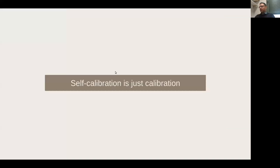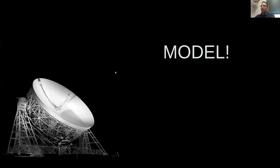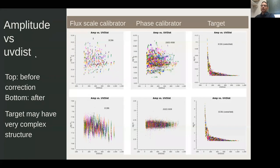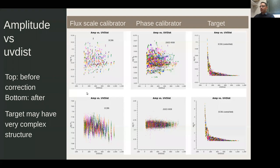Self-calibration is just calibration — there is no actual difference. You apply gaincal and applycal to solve for the residual gains affecting the data. The main difference is that you need a model — and a good model. This is an example in visibility space: on top is before any correction, and after normal calibration you can see the calibrators are point-like sources while the target can be much more complex.